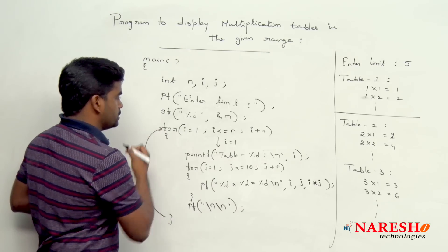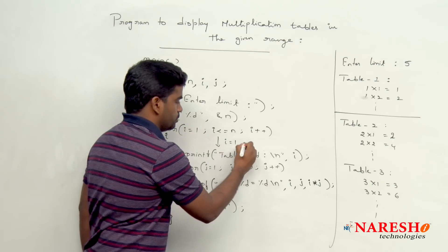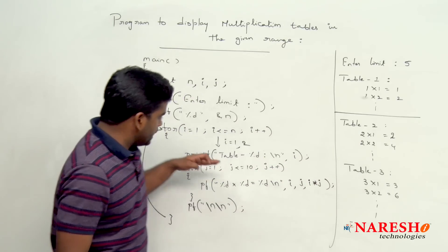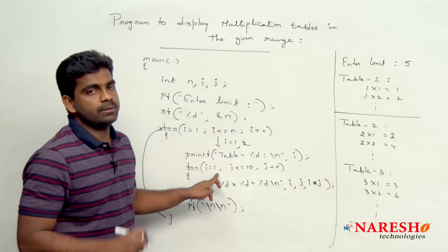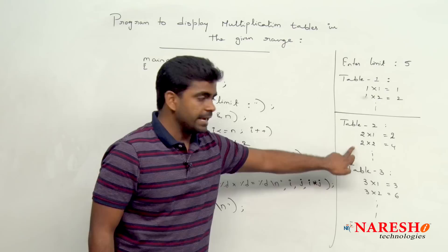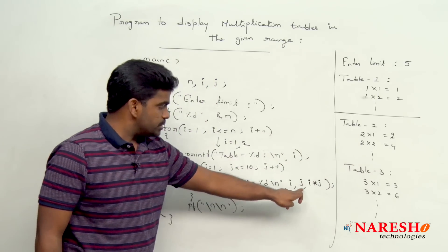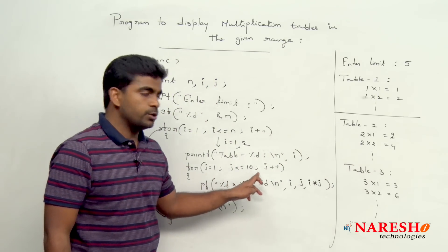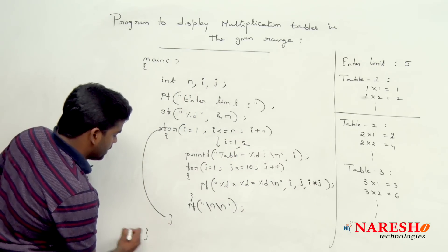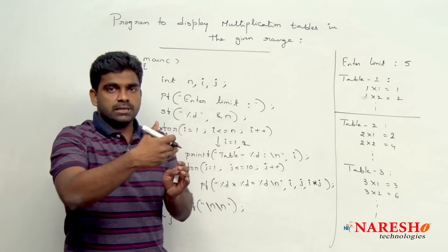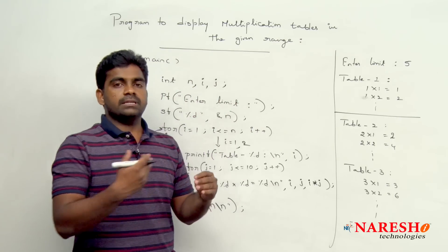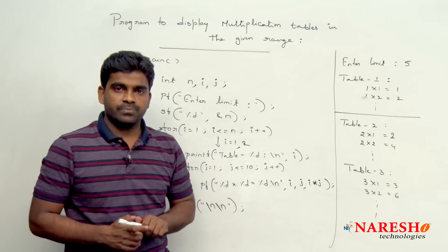The control then goes back to the outer loop and i becomes 2. Control comes inside, table 2 is displayed, and the inner loop repeats again 10 times. In the first position i is 2, displayed 10 times, and j repeats from 1 to 10. Like this, the program displays all tables from table 1 up to the specified table.